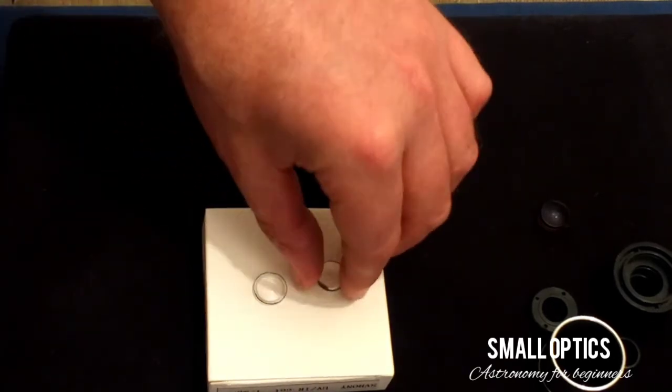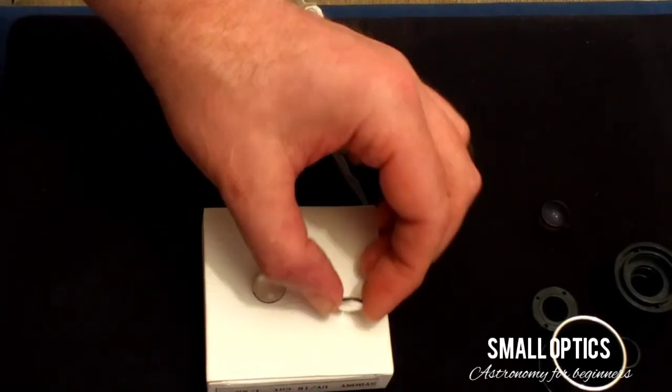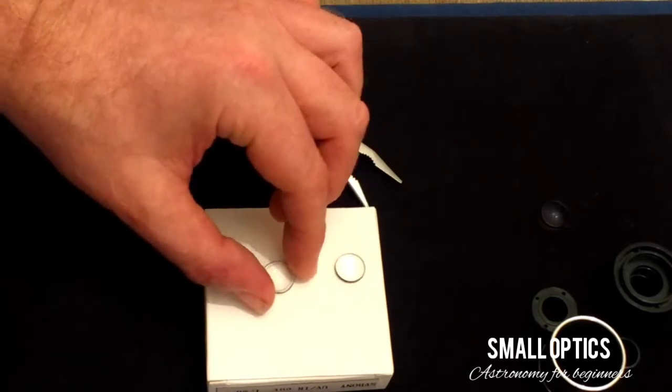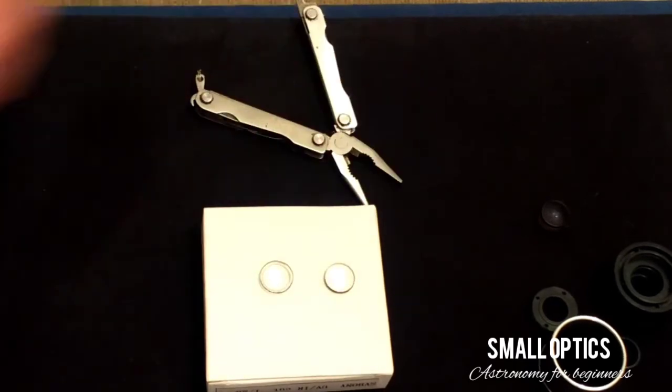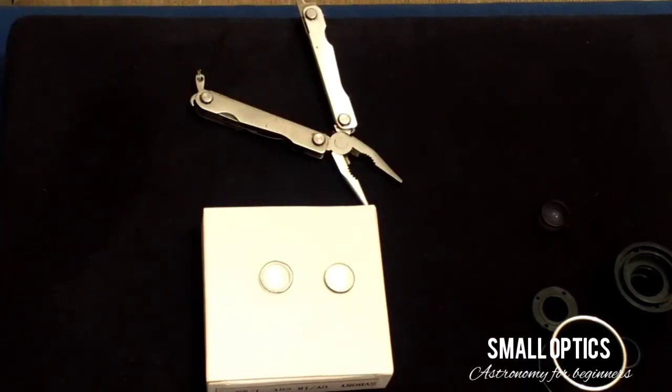I just can't think of another word to explain the shape of the lens. So anyway, that's the guts of an SV Bony aspheric eyepiece.